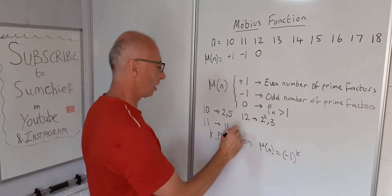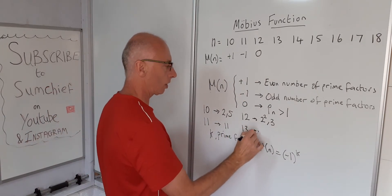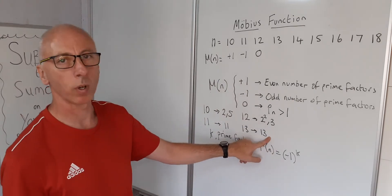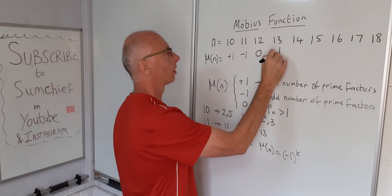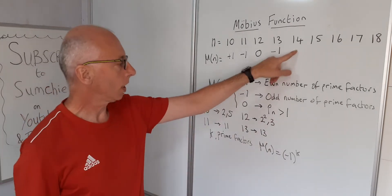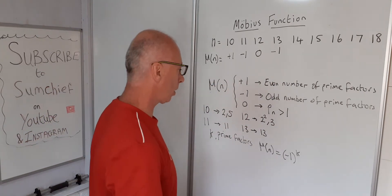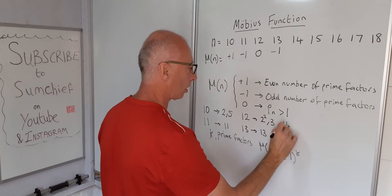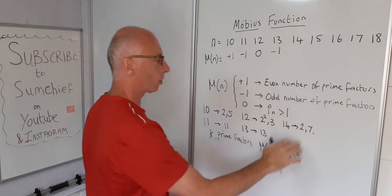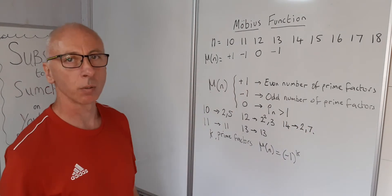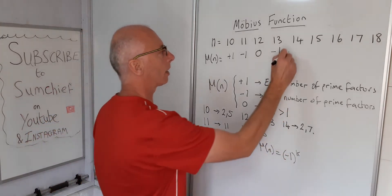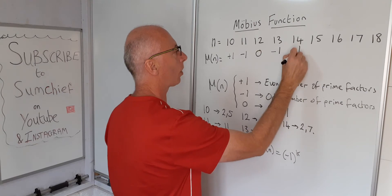13 is just 13 itself, so that's minus 1 to the power of 1, which gives minus 1. Then 14 is made up of 2 and 7 — that's an even number of prime factors, so minus 1 squared gives us plus 1.